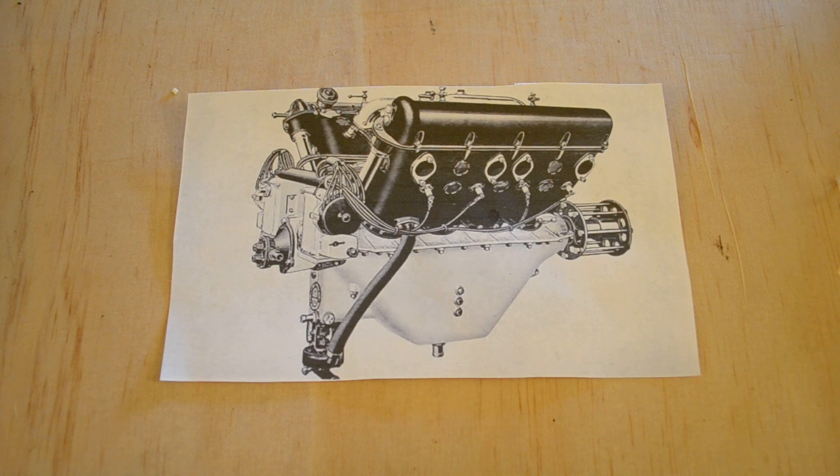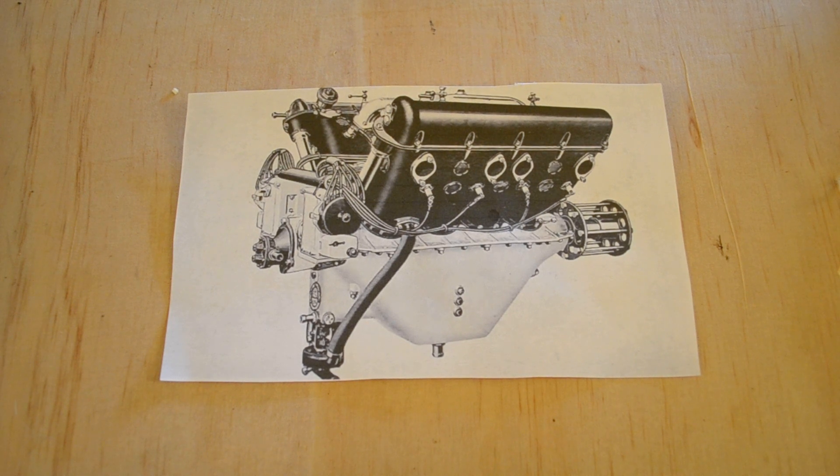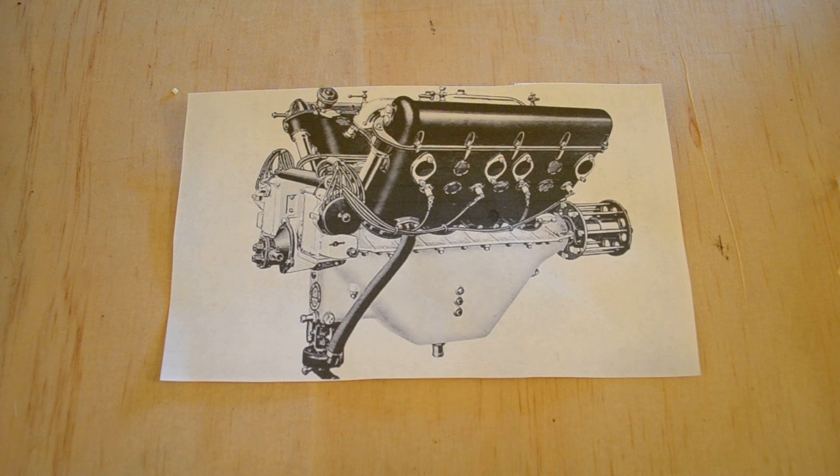The first few SE-5As were fitted with 150 horsepower direct drive Hispano Suiza, but they quickly switched to a 200 horsepower engine that was geared down to swing a really big four-bladed prop. This was probably the worst version of the SE-5A, because those geared engines were prone to the gears breaking. The best version of the SE-5A was the one fitted with a 200 horsepower Wolseley Viper. The Wolseley Viper is basically just a Hispano Suiza with higher compression. These engines made 200 horsepower at 2000 RPM.